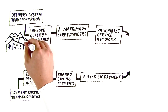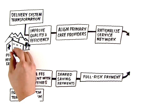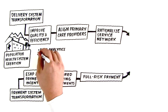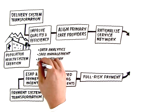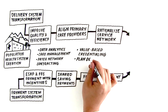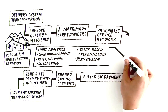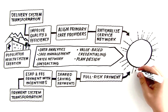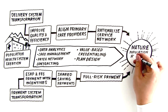Throughout the process, rural health systems need to develop and invest in new capabilities like data analytics, care management, payer network contracting, value-based credentialing, and plan design that are critical to improving outcomes and lowering costs and are the foundation of a mature population health system.